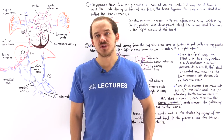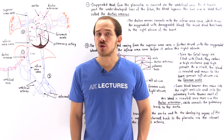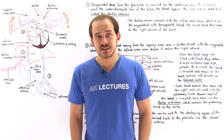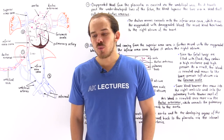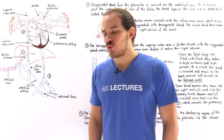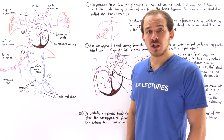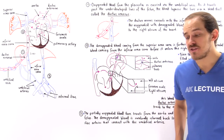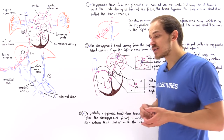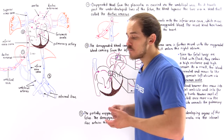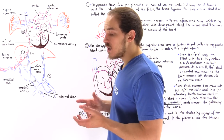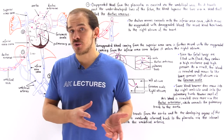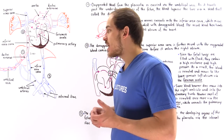The way that blood moves inside the circulatory system of a developing fetus is quite different than the way that blood moves inside the fully functional adult individual. In this lecture, we're going to focus on the former — we're going to discuss the way that blood moves inside the developing circulatory system of the fetus.